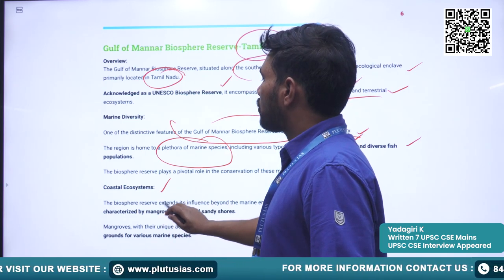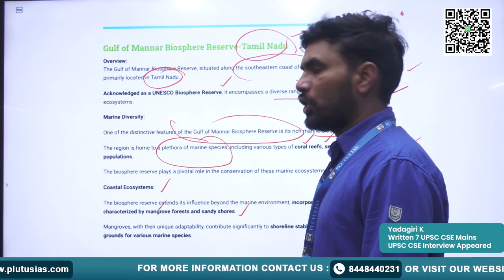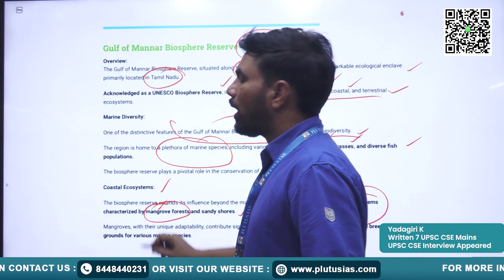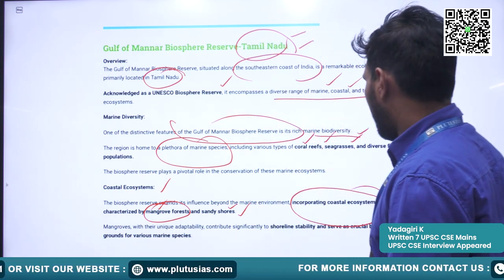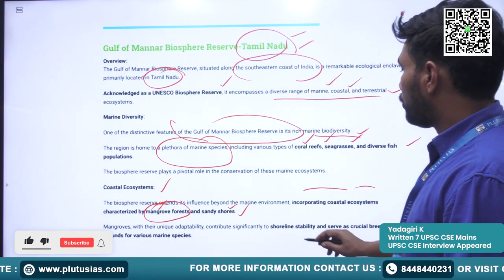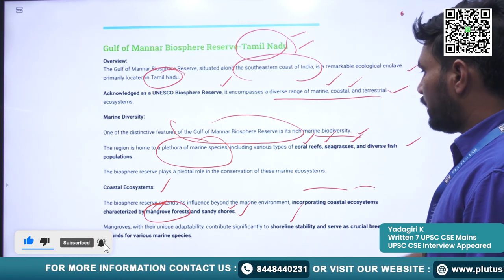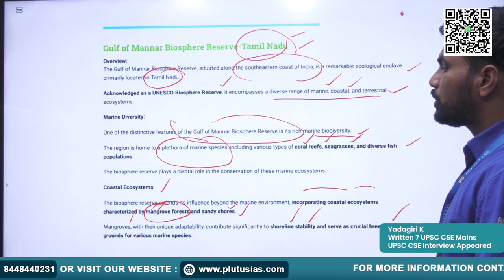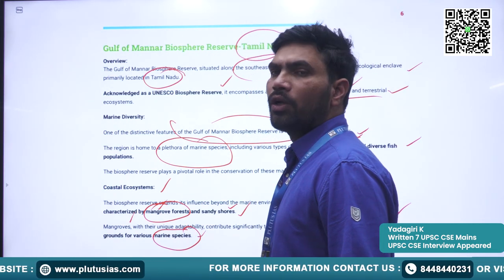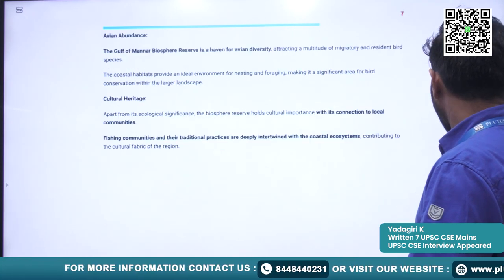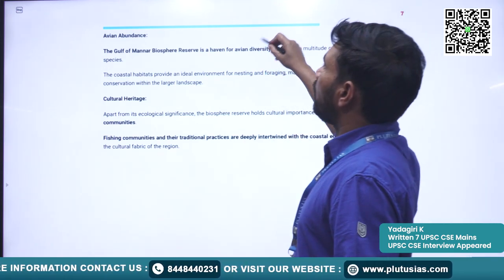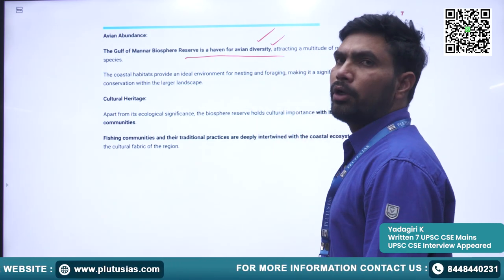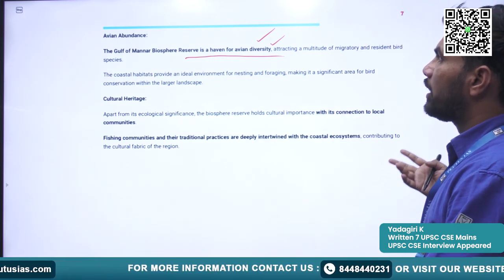The ecosystem is characterized by mangrove forests and sandy shores. It incorporates various coastal ecosystems, and the mangroves contribute to shoreline stability and serve as a crucial breeding ground for various marine species including fish. The Gulf of Mannar Biosphere Reserve is also a heaven for avian biodiversity, with many migratory bird species found here.